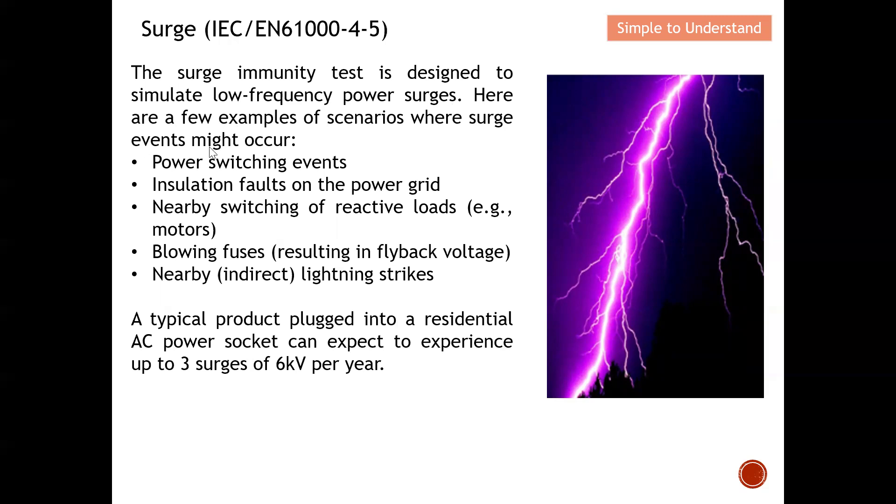Here are a few examples of scenarios where surge events might occur: power switching events when we switch from one power source to another, insulation faults on the power grid, nearby switching of reactive loads, fuses blowing nearby, and lightning strikes. A typical product plugged into a residential AC power socket can be expected to experience up to three surges of six kilovolts per year.